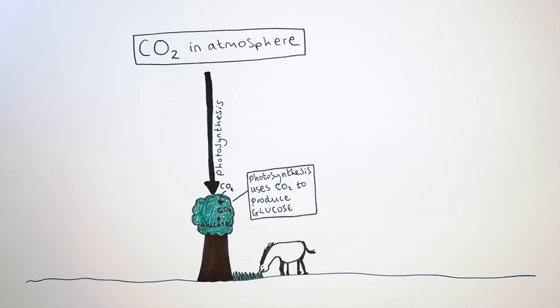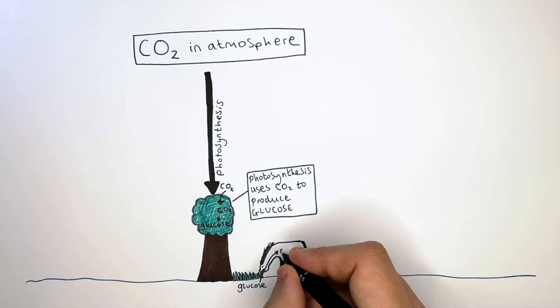When an animal eats the plants, it is going to ingest the glucose via the starch. So the glucose is going to be transferred from the plants into the animals.